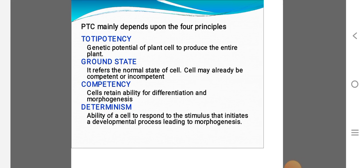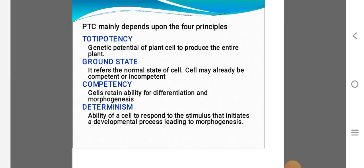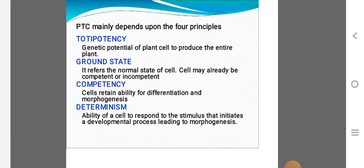Plant tissue culture mainly depends upon four principles. They are called totipotency, ground state, competency, determinism. In totipotency, the general potential of plant cell to produce entire plant. Ground state means it refers the normal state of cell. Cell may already be competent or incompetent. Then competency means cell retains ability for differentiation and morphogenesis. Determinism means the ability of a cell to respond to the stimulus that initiates a development process leading to morphogenesis.